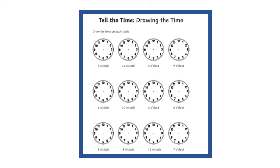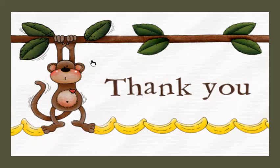This is your second sheet of homework. You need to draw the long pointer and the short pointer. The long pointer will be pointing at number 12, and the small pointer will be pointing at the number written underneath the clock. For example, it says 5 o'clock, so the long pointer points to 12 and the small one points to number 5. Thank you for listening — see you next math session. Bye bye!